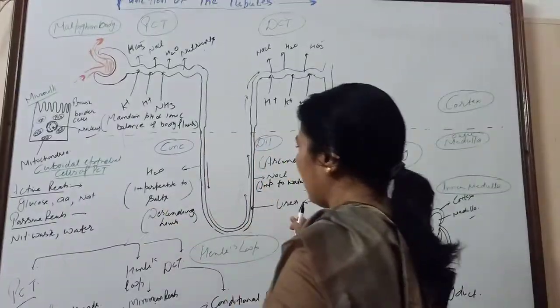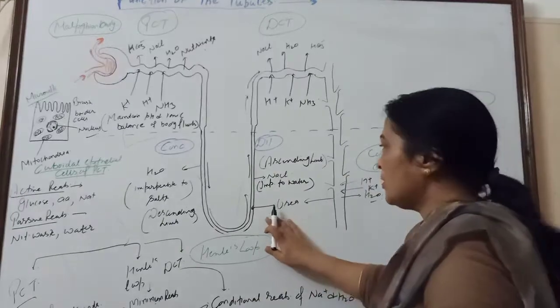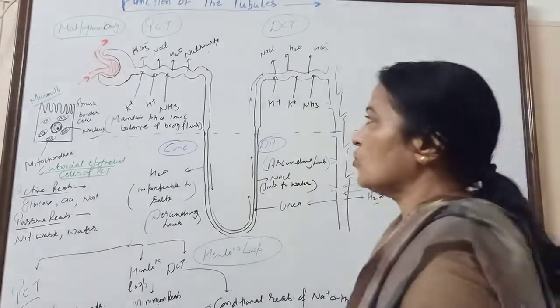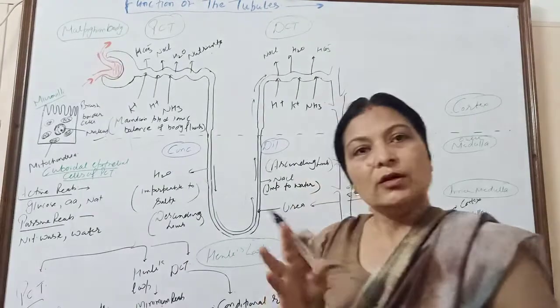Now, the left space is nephron. This is called interstitial space. This is interstitial fluid. This is counter current mechanism.